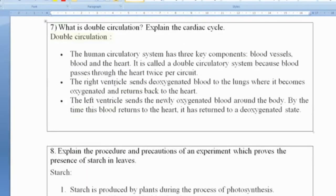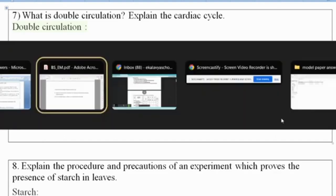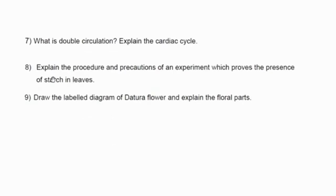What is double circulation? The human circulatory system has three components: blood vessels, blood, and the heart. It is called a double circulatory system because blood passes through the heart twice per circuit. The right ventricle sends deoxygenated blood to the lungs where it becomes oxygenated and returns to the heart. The left ventricle then sends the newly oxygenated blood around the body, and by the time it returns to the heart it is deoxygenated again.